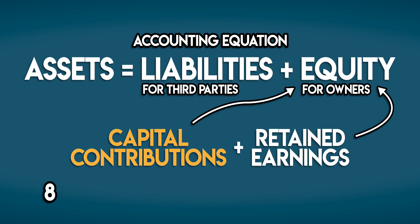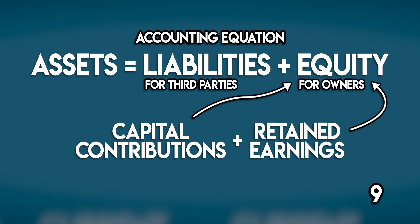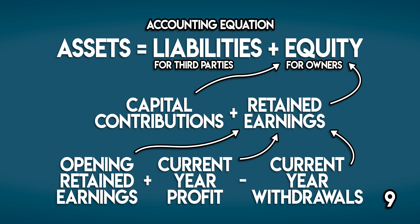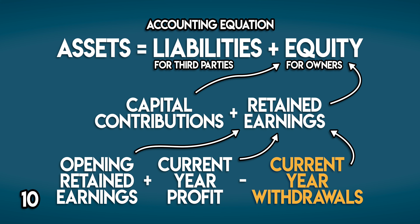Capital contributions are the funds invested into a business by its owners out of their own pockets. Retained earnings are a business's accumulated profits held for future use, built up over time from opening retained earnings plus current year profit, less withdrawals. Opening retained earnings are brought forward from the end of the previous accounting period. Withdrawals are the owners claiming their net assets by taking money out of the business — also called drawings or dividends, depending on how the business is structured.